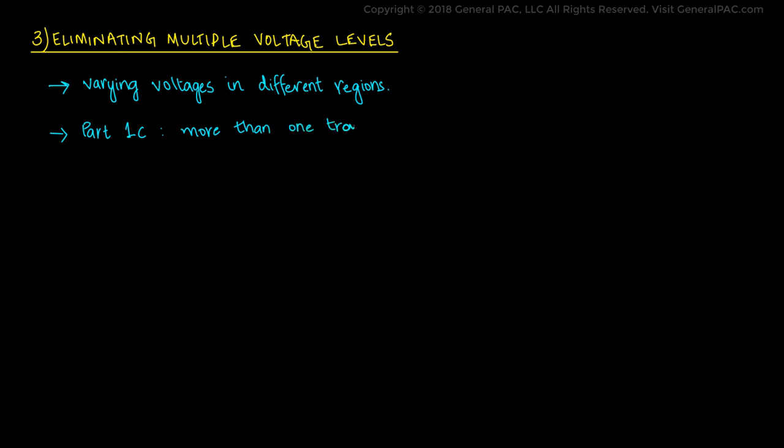The third reason is eliminating multiple voltage levels. When we are dealing with power systems that have different voltage levels in different areas of the network, we prefer to employ per unit calculations. Similar to what we did in Part 1c of this series, where we solved an example of a power system having two transformers that varied the voltage levels in three different regions. Converting such system into a per unit equivalent simplifies the calculations, and we will be looking at that in Part 2d.